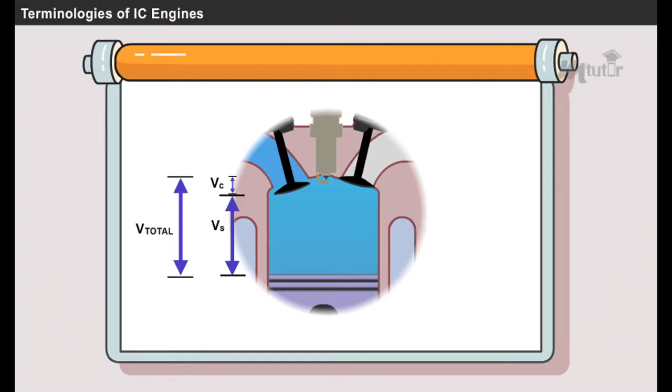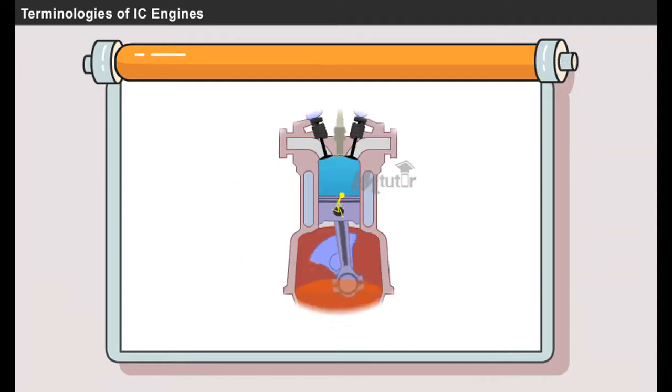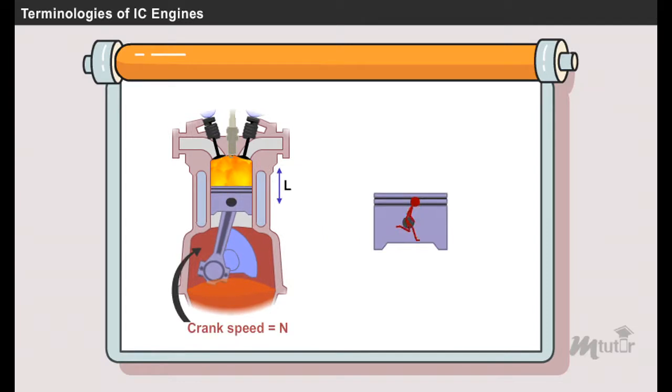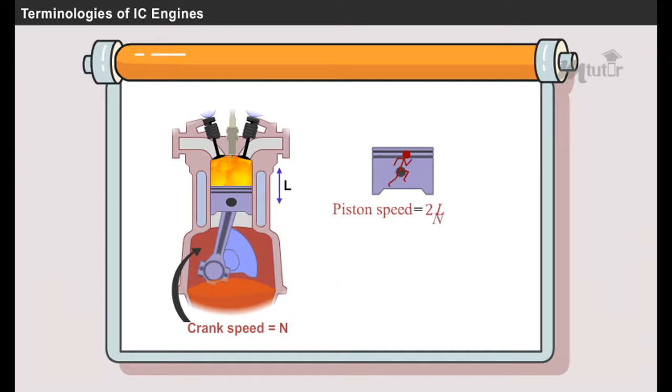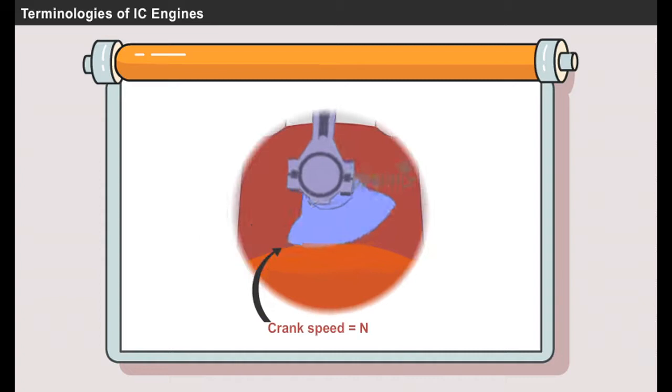The rate at which the piston moves inside the cylinder is known as piston speed. This rate is not constant. Piston speed is equal to 2 × L × N, that is two into length of the stroke and speed of the engine. Engine speed is nothing but the crankshaft speed.